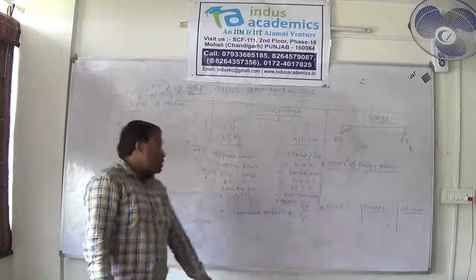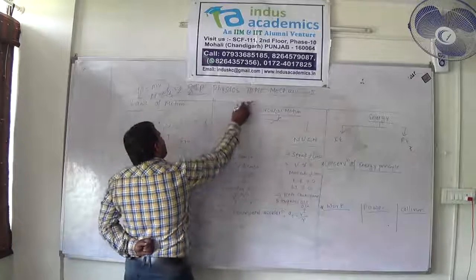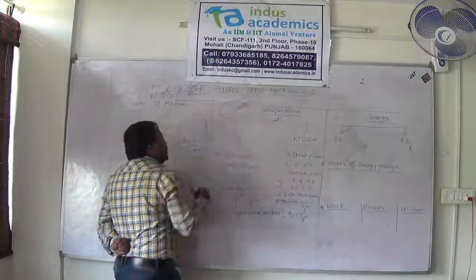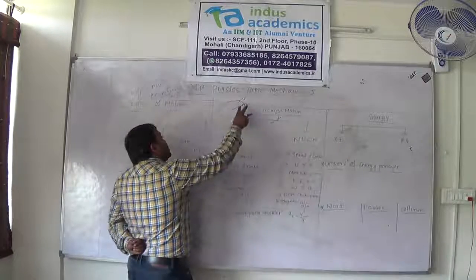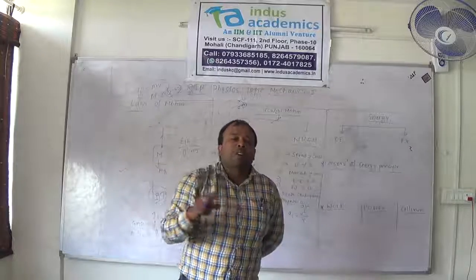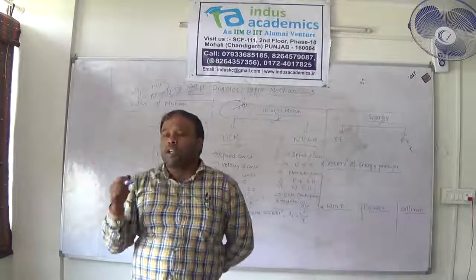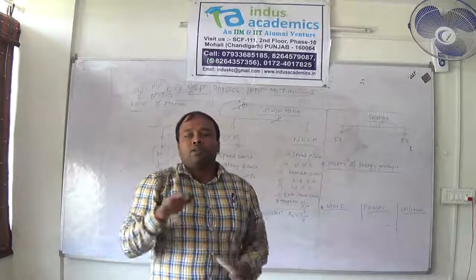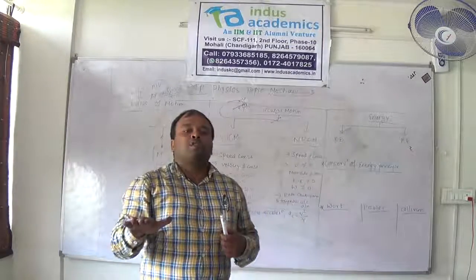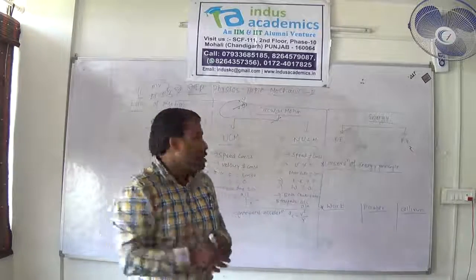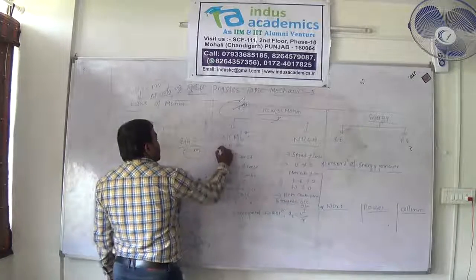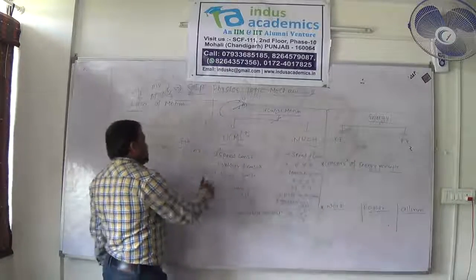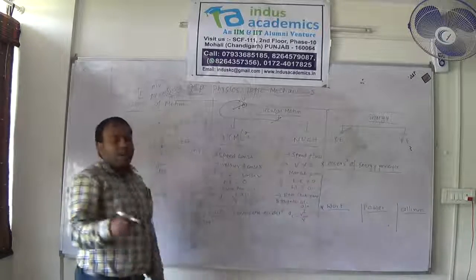Coming to circular motion — a body of mass M moving in a circular track of radius R with some velocity. There are two possible cases. In uniform circular motion (UCM), speed is constant — I may run at 2 or 3 meters per second — but direction is changing at every instant. So velocity is never constant in circular motion. Since speed is constant, kinetic energy (half M times speed squared) also remains constant.